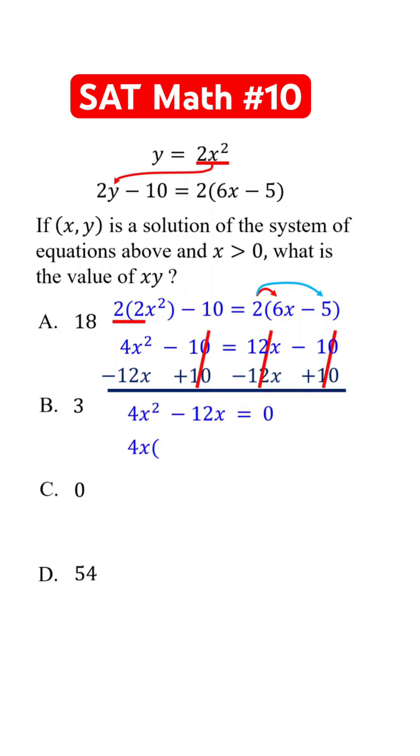Next, factor out 4x from each term. Now, set each factor equal to 0.